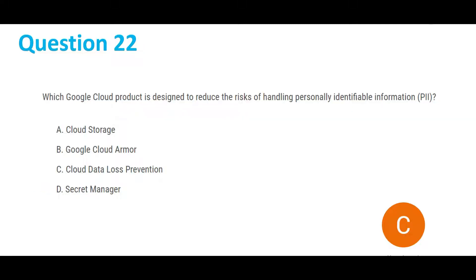Moving on to question 22: which Google Cloud product is designed to reduce the risks of handling personally identifiable information (PII)? Options are: A, Cloud Storage; B, Google Cloud Armor; C, Cloud Data Loss Prevention; and D, Secret Manager. Option A, Cloud Storage, is clearly not the answer since it's only for storage. Option B, Cloud Armor, is for preventing DDoS attacks, so that's also not the answer. Option C, Cloud Data Loss Prevention, is our answer — it does exactly what the question asks and is designed to reduce the risk of handling PII.